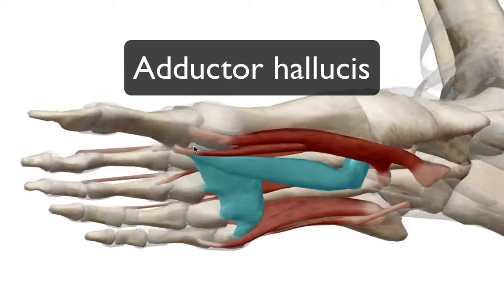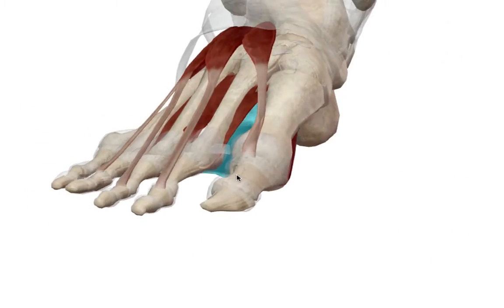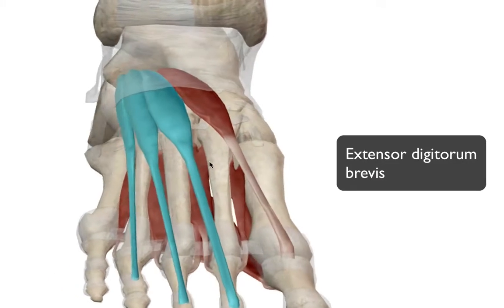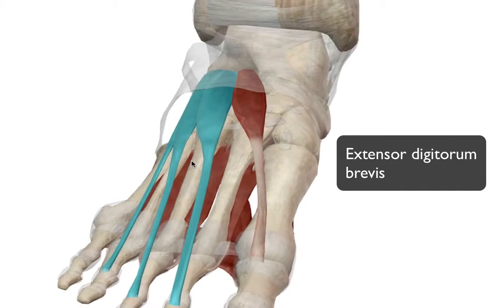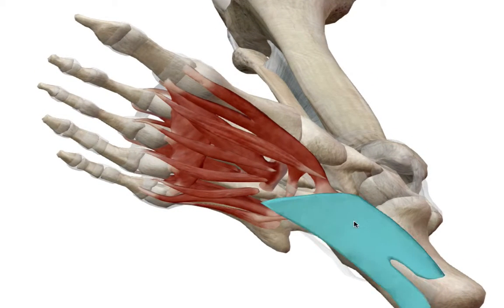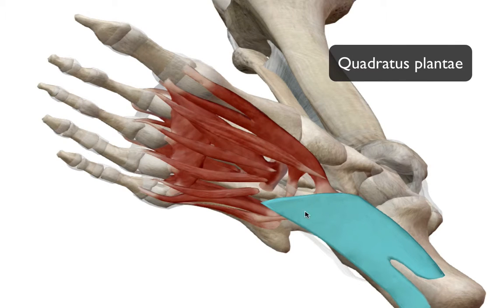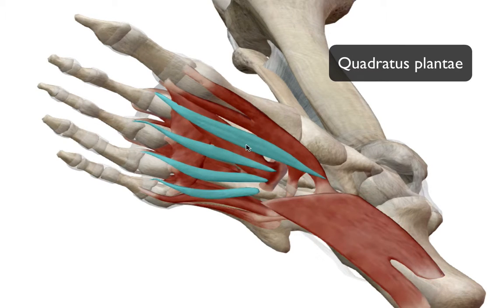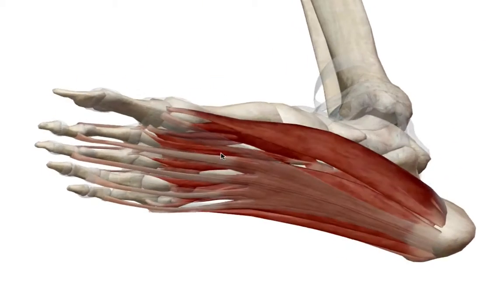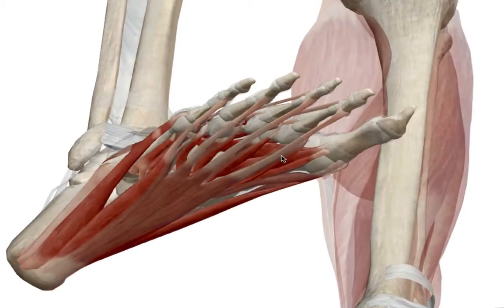Now let's take a look at the extensor muscles: your extensor digitorum brevis and the extensor hallucis brevis, which moves your big toe. In layer three, we have the quadratus plantae and the lumbricals.